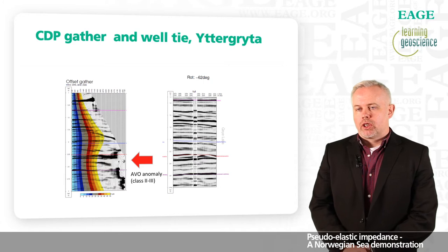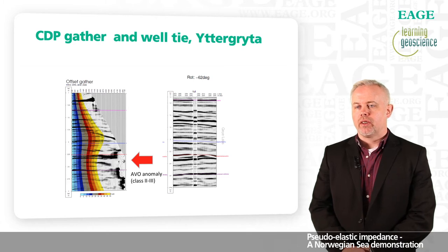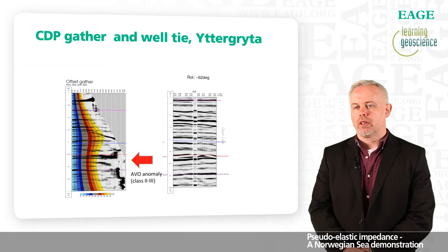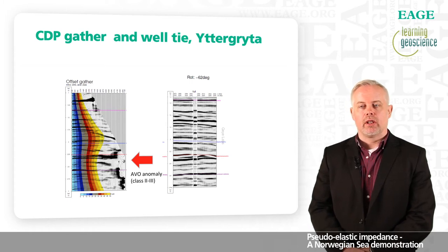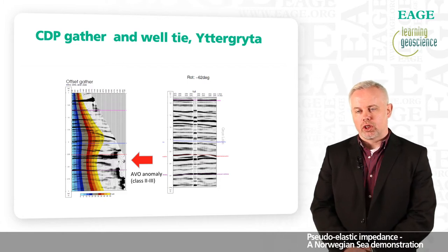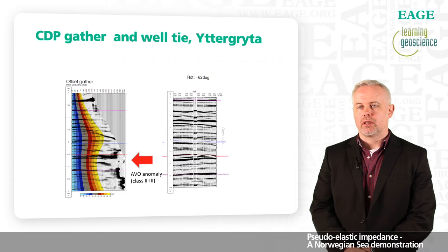The next slide shows the CDP gather where we can evaluate the seismic pre-stack data. We can see there is an AVO anomaly corresponding to this gas discovery — it's a class two to three with a weak negative AVO reflectivity at the near offsets, becoming increasingly negative with far offsets. The well-tie is shown to the right together with the synthetic at the well location.